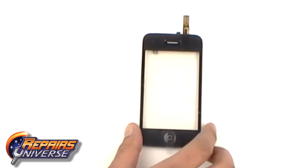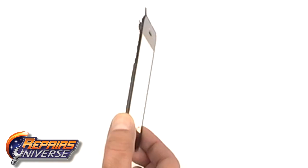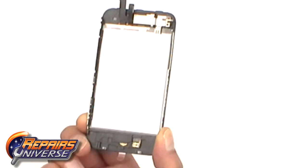This is the touchscreen digitizer for your device. We include the external glass touchscreen digitizer, home button, and the frame pre-attached.